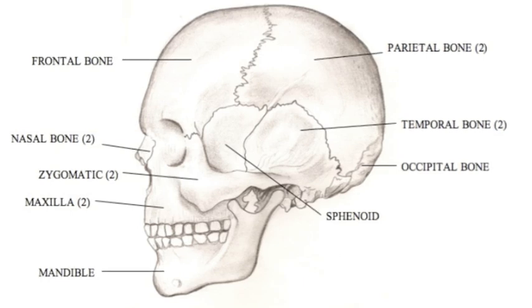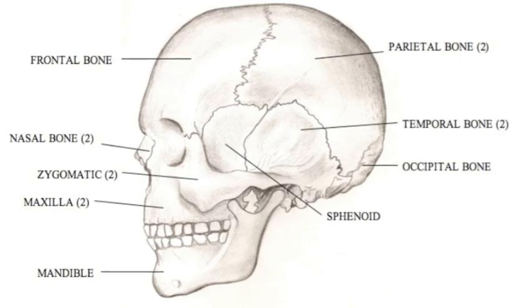Of the cranial bones, the frontal bone, the two parietal bones, the two temporal bones, and the occipital bone are pictured here.